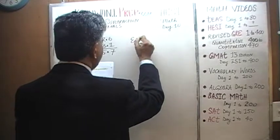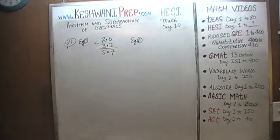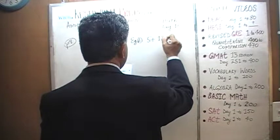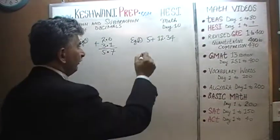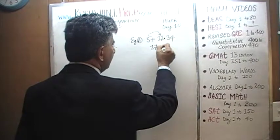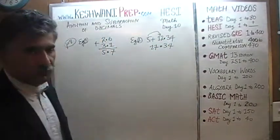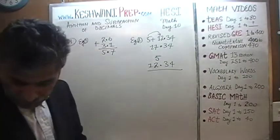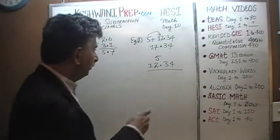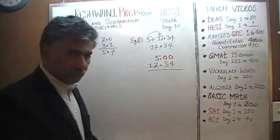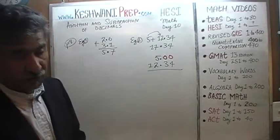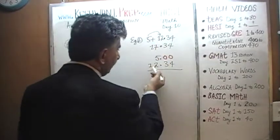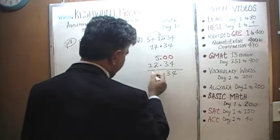Example number 2: 5 plus 12.34. This is very simple because 5 plus 12 is 17 and then 0.34. But if you did need to show your work, it would be written as 5.00 plus 12.34, inserting zeros to hold the place. So 5 plus 12 is 17, and this is just 0.34. That's your answer: 17.34.